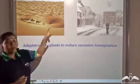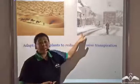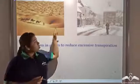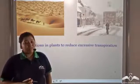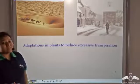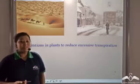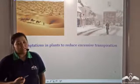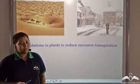This is a very hot desert where there is less water, and this is a very cold country where water has converted into ice. So in both conditions there is a shortage of free water, and plants cannot take up free water from the soil. So these plants have to adapt themselves to reduce excessive transpiration because they need to retain as much water as possible in their body. Now what are the various adaptations that these plants do? Let us look into it.